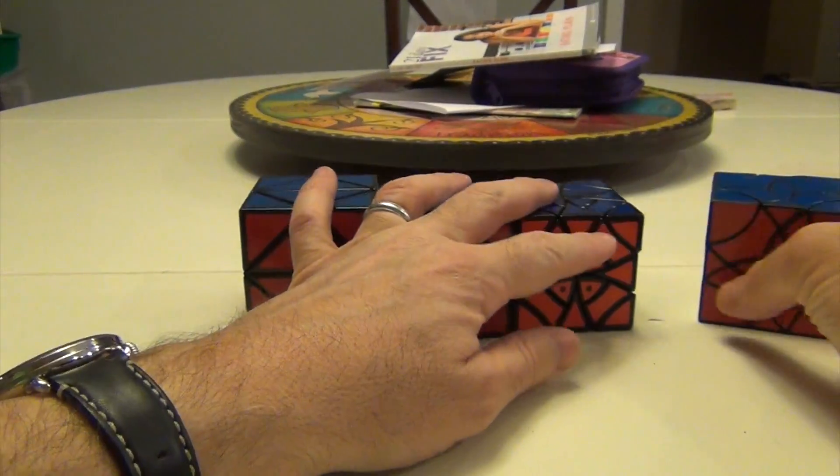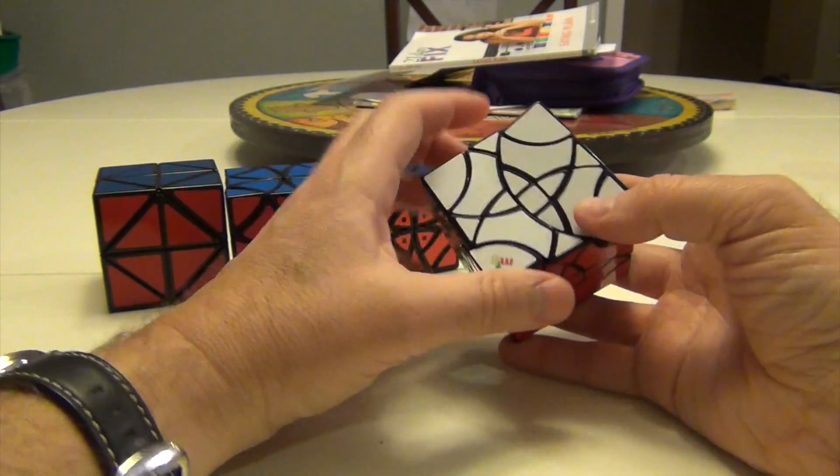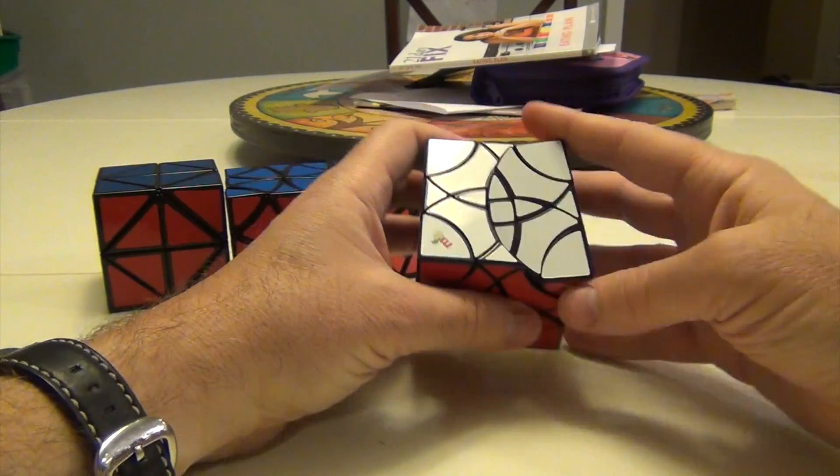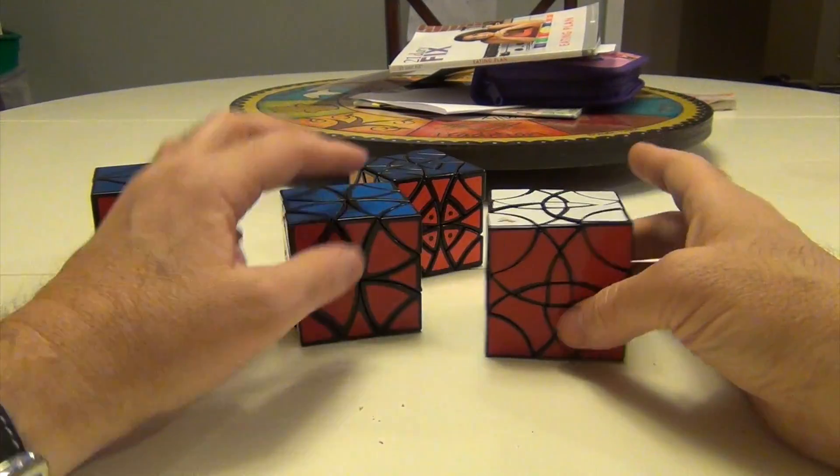So what was then done is they came up with this guy, which is the CurvyCopter 3. So what does this add to it? Where do we go from here? Well, first off you can see that there's a lot more noise in here. There's a lot more going on here. You've got these petals that are here.